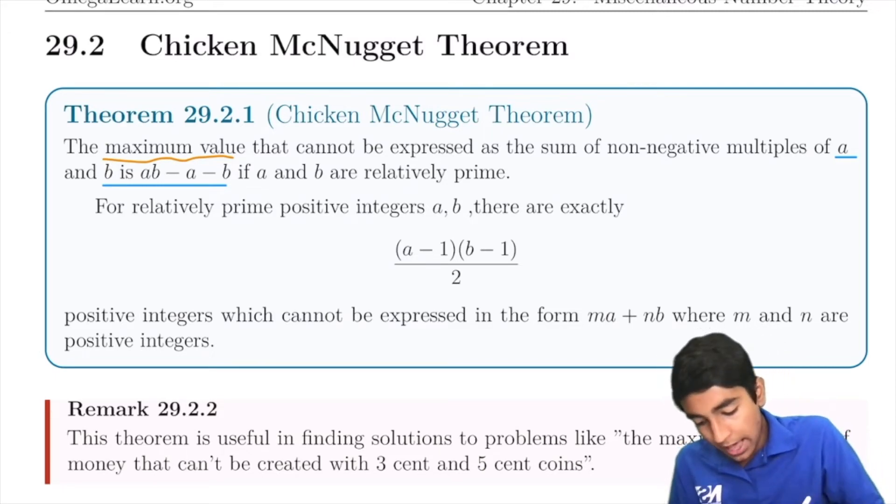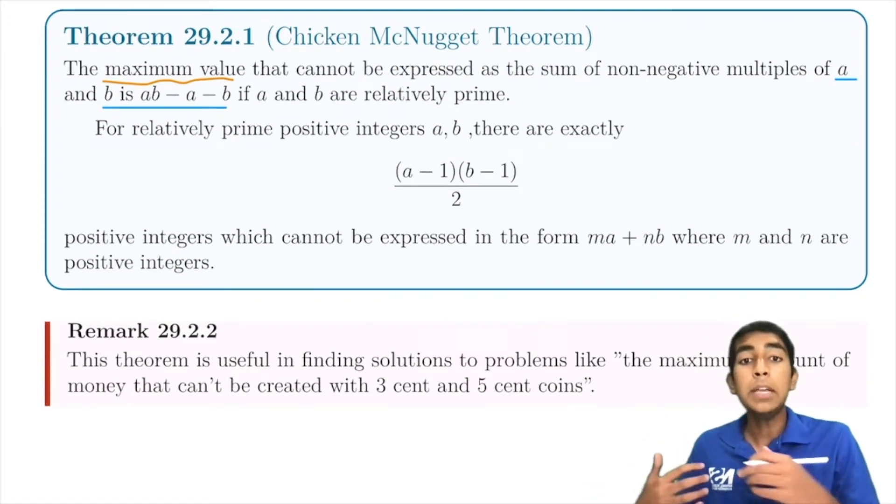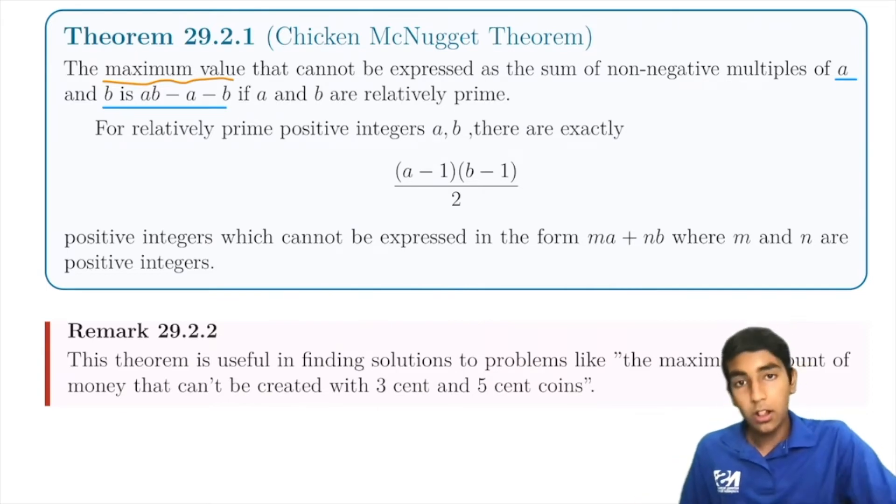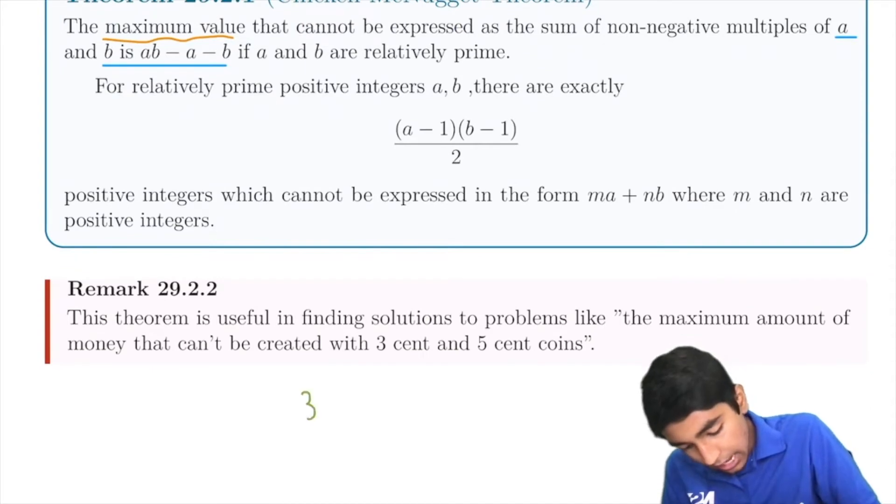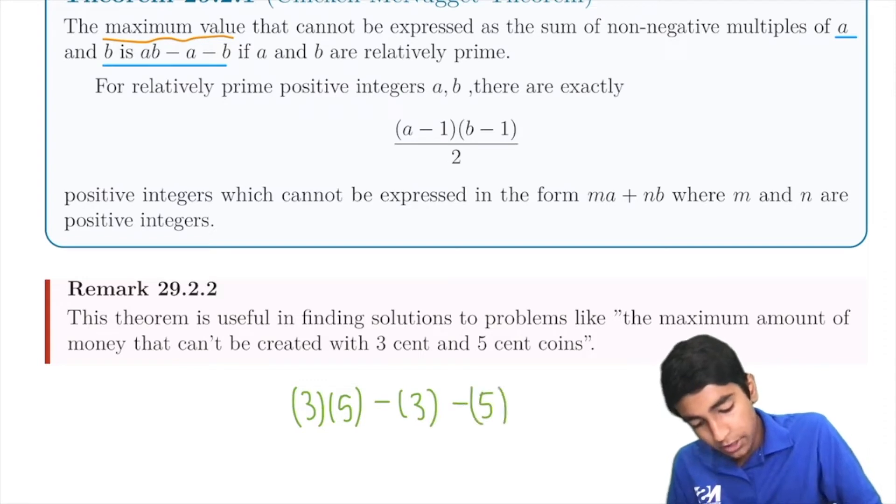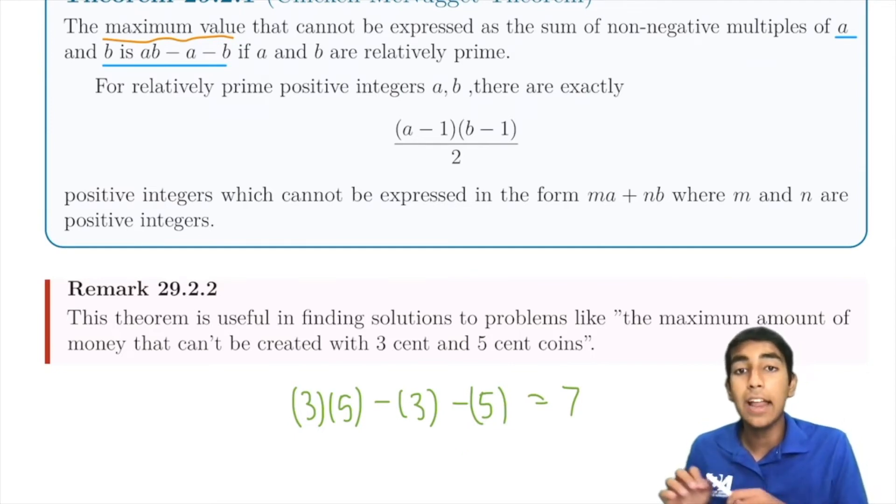For example, let's say we have this problem here. What is the maximum amount of money that cannot be created with 3 cent and 5 cent coins? Well, for that, we would just apply this theorem. 3 × 5 - 3 - 5, which is 15 - 8 = 7. So 7 is the largest value that can't be created with 3 and 5 cent coins.